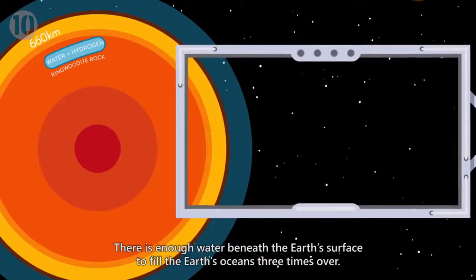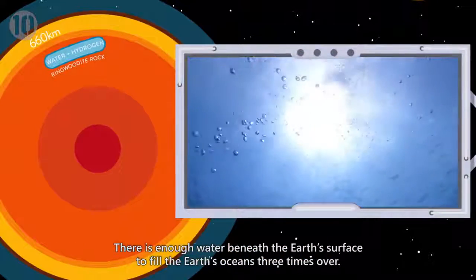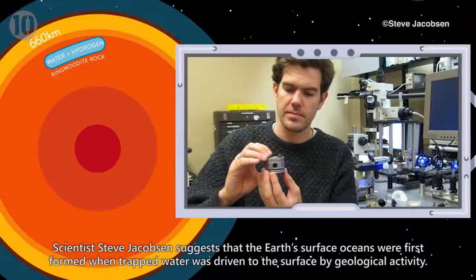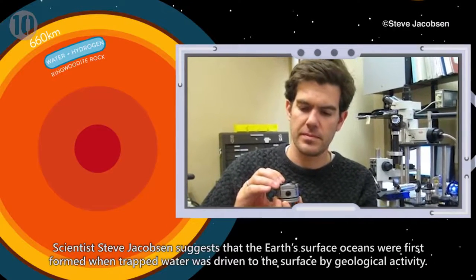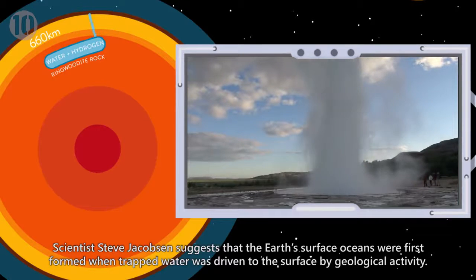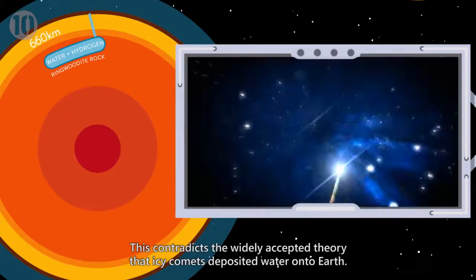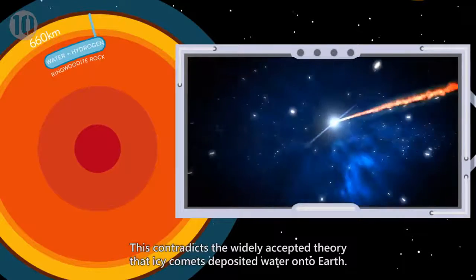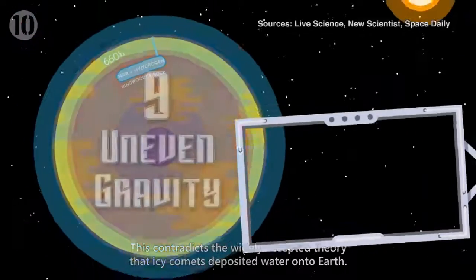There is enough water beneath the Earth's surface to fill the Earth's oceans three times over. Scientist Steve Jacobson suggests that the Earth's surface oceans were first formed when trapped water was driven to the surface by geological activity. This contradicts the widely accepted theory that icy comets deposited water onto Earth.